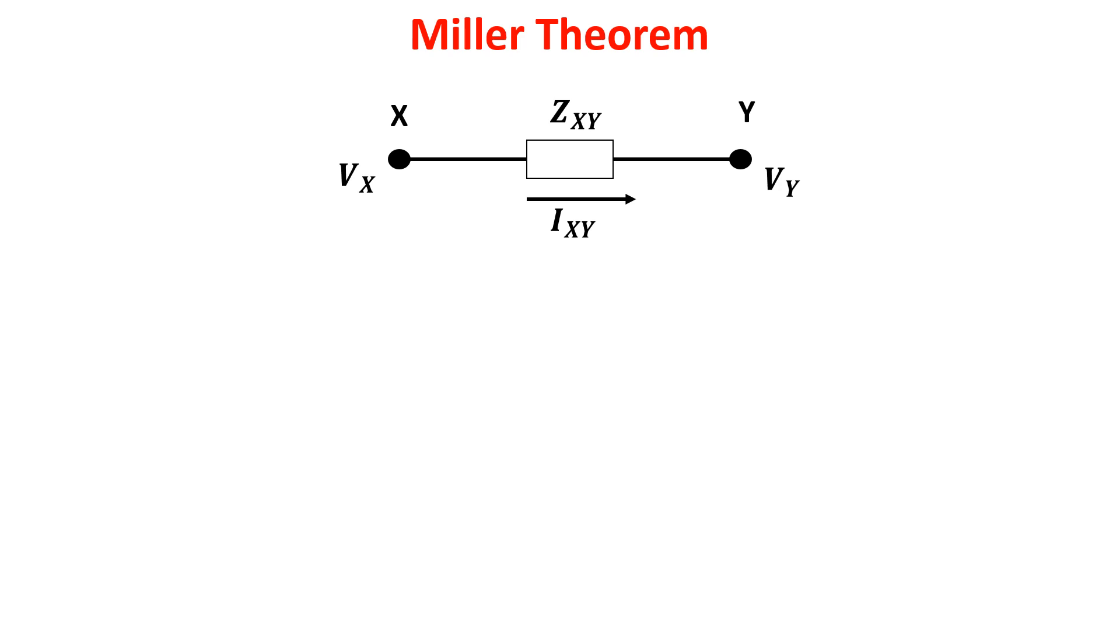Now we see the general Miller theorem from which the Miller effect derives. It asserts that a floating impedance element supplied by two voltage sources connected in series might be split into two grounded elements with corresponding impedances.